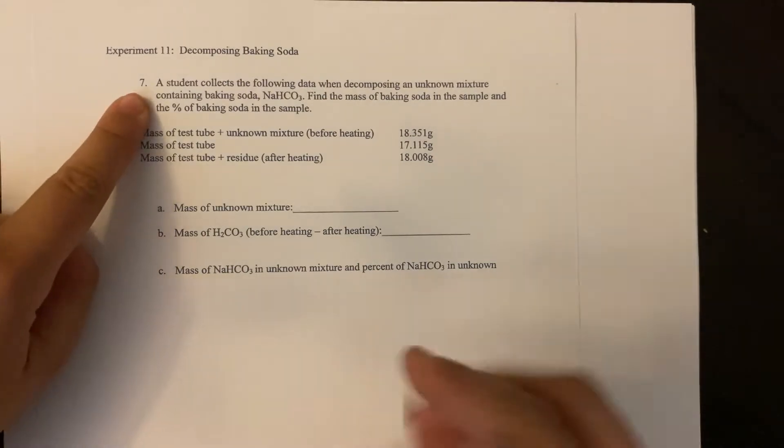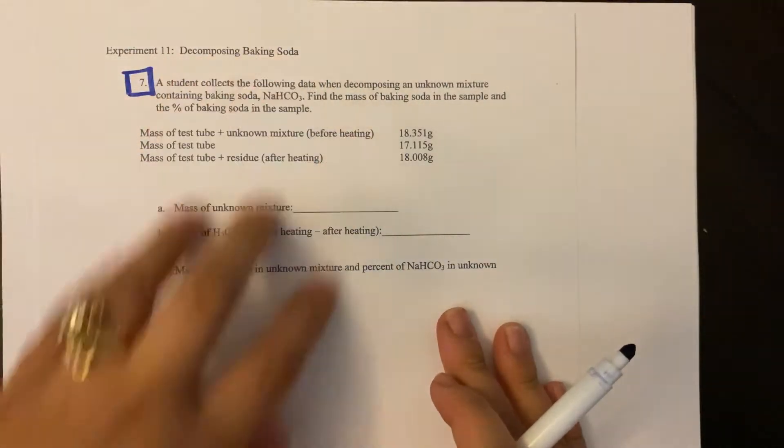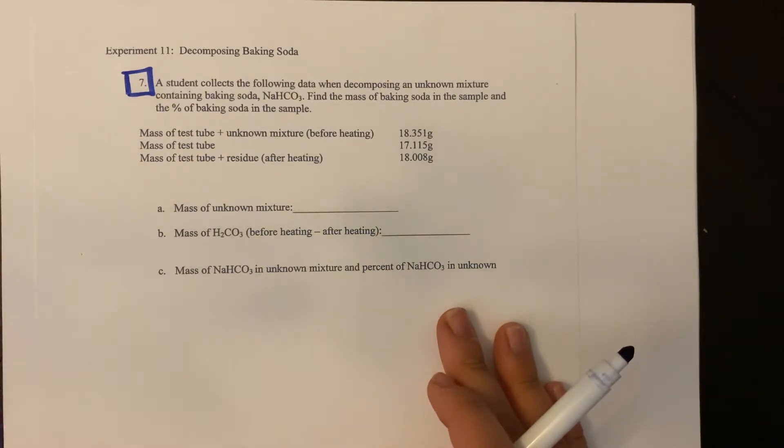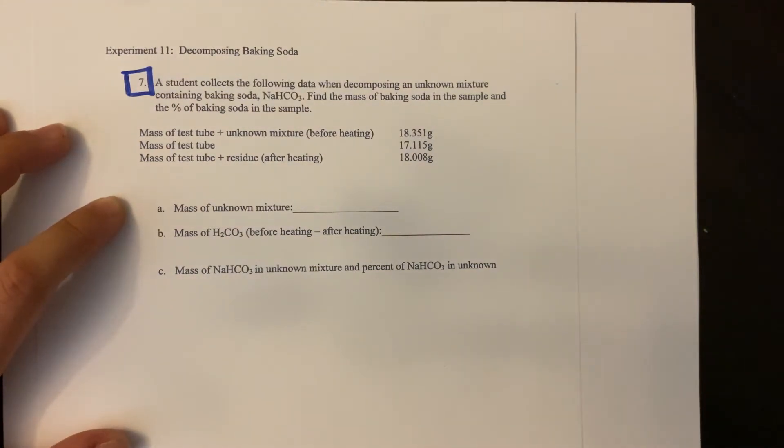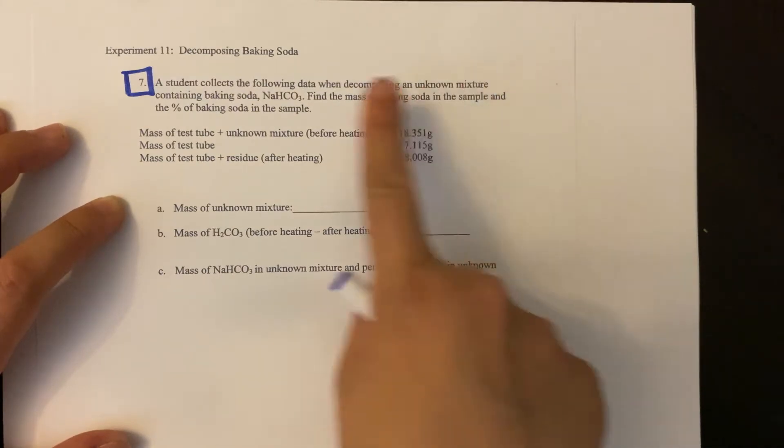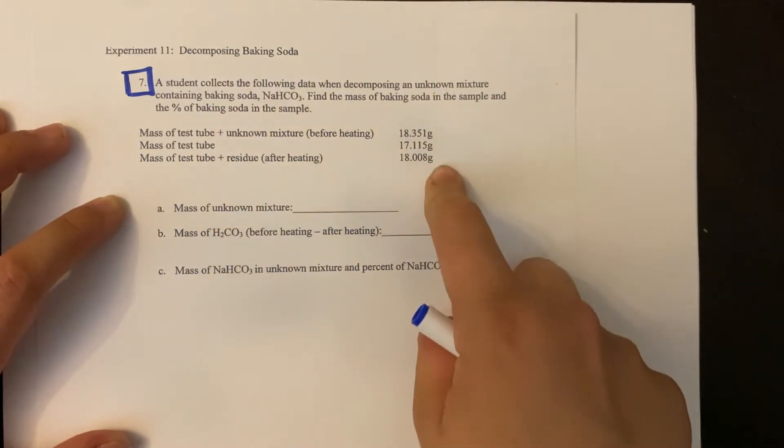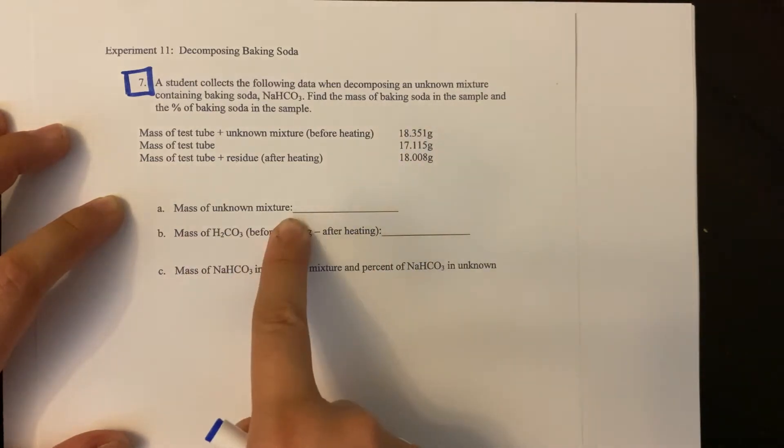So this is actually number seven in your pre-lab, and I'm just going to kind of go through it with you, that way hopefully you will understand it better, and then you can solve the one from your actual lab. They do the experiment, they decompose baking soda, and then here's your data. I give you some numbers, and then you're supposed to figure out some stuff.